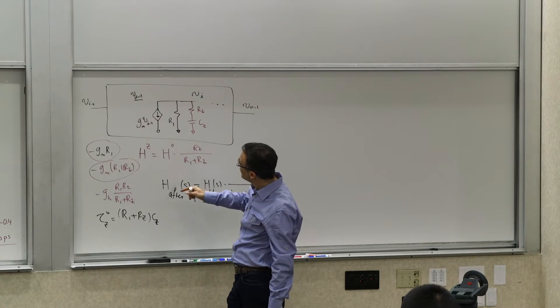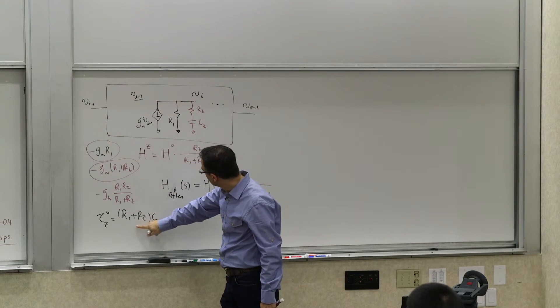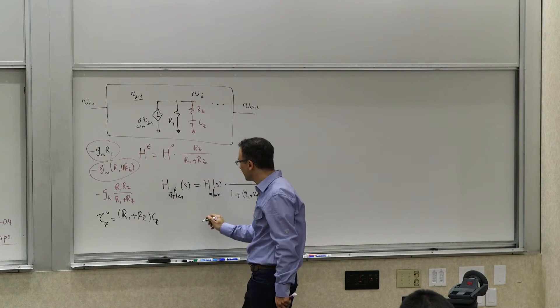And the numerator would be the ratio of Hz over H0 divided and times tau_z. When you multiply these things, you see that this term and that term cancels. We are calculating A1.